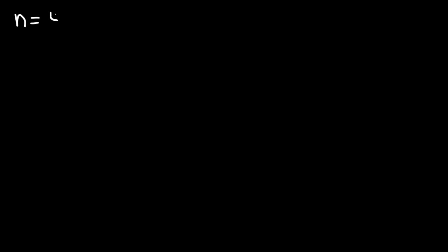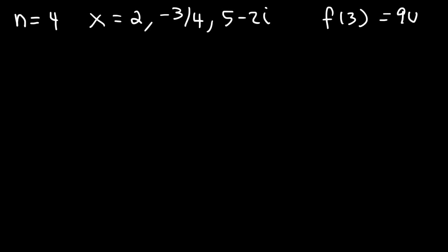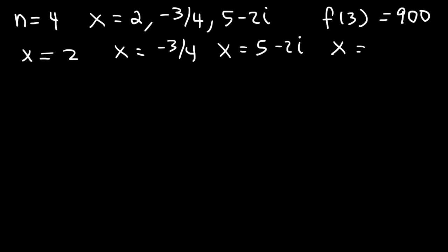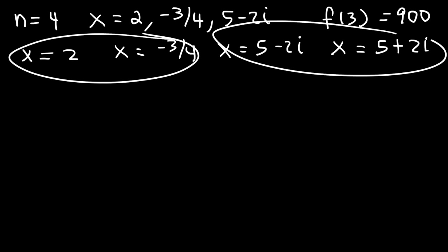Here's another one. Let's say we have a polynomial with a degree of 4, and the zeros are 2, negative three-fourths, and 5 minus 2i. Now f of 3 is 900. Because it's degree 4, we need four different values for x. The other zero is 5 plus 2i. So we have two real solutions and two imaginary solutions.